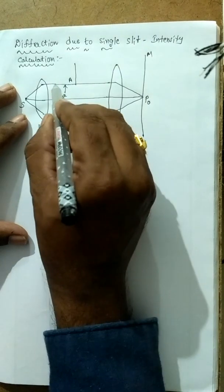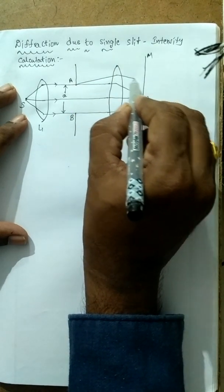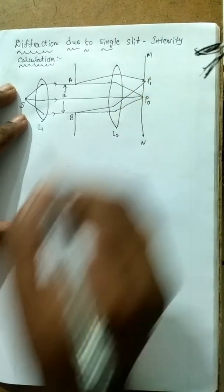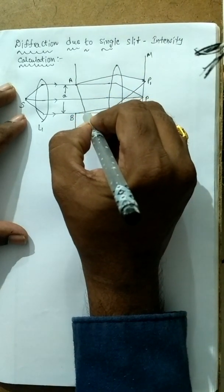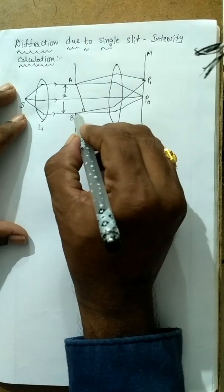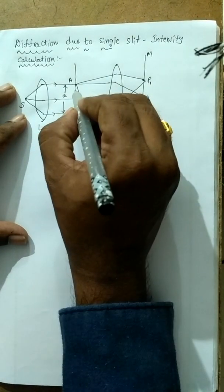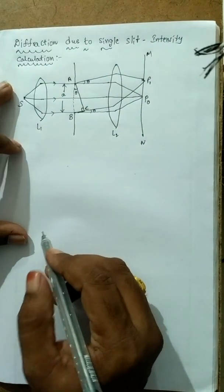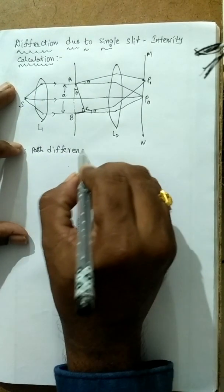When the parallel beam of rays strikes the slit, they bend — the diffracted rays reach the screen at position P1. To calculate the path difference between these two rays, we draw a normal. The extra distance traveled is BC, and the path difference equals BC.